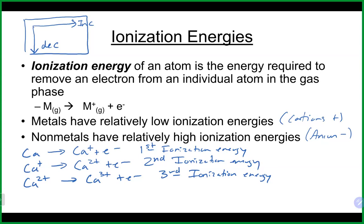As the metal loses each electron, it gets smaller and smaller because it keeps losing electron cloud. Looking at calcium, its electron configuration is 1s2, 2s2, 2p6, 3s2, 3p6, 4s2. Calcium is in group 2, so it has two valence electrons — those 4s2 electrons. Losing the first electron is not too bad.